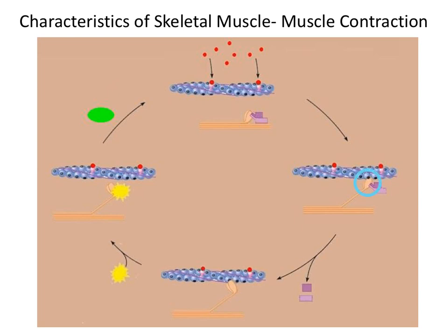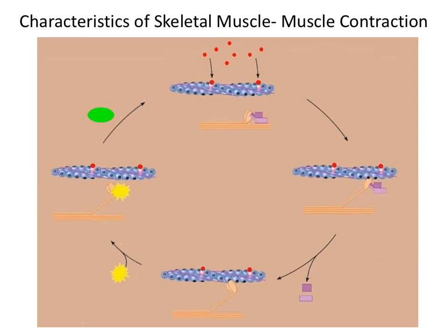The binding of the myosin head to the active binding site of G-actin is called a crossbridge. Next, ADP and phosphate are released from the myosin head. The release of ADP and phosphate changes the configuration of the myosin head from an upright position to a bent position — we call this the working stroke. The working stroke pulls on the actin myofilament, causing actin and myosin to slide past one another.